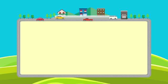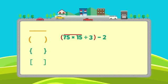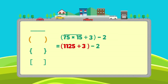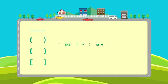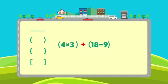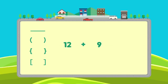Why don't we try one with brackets? This sum has only two brackets. First, solve the operation under the line bracket. Then solve the operation in the round brackets. And finally, find the difference between the two numbers, which is 373. Let me do one more problem which has operations having similar brackets. We need to solve the operations in each bracket at the same time and then solve the other operations. 4 multiplied by 3 equals 12, and 18 minus 9 equals 9. Once we solve the operations inside the brackets, we can add the two numbers and find the sum. 12 plus 9 equals 21.